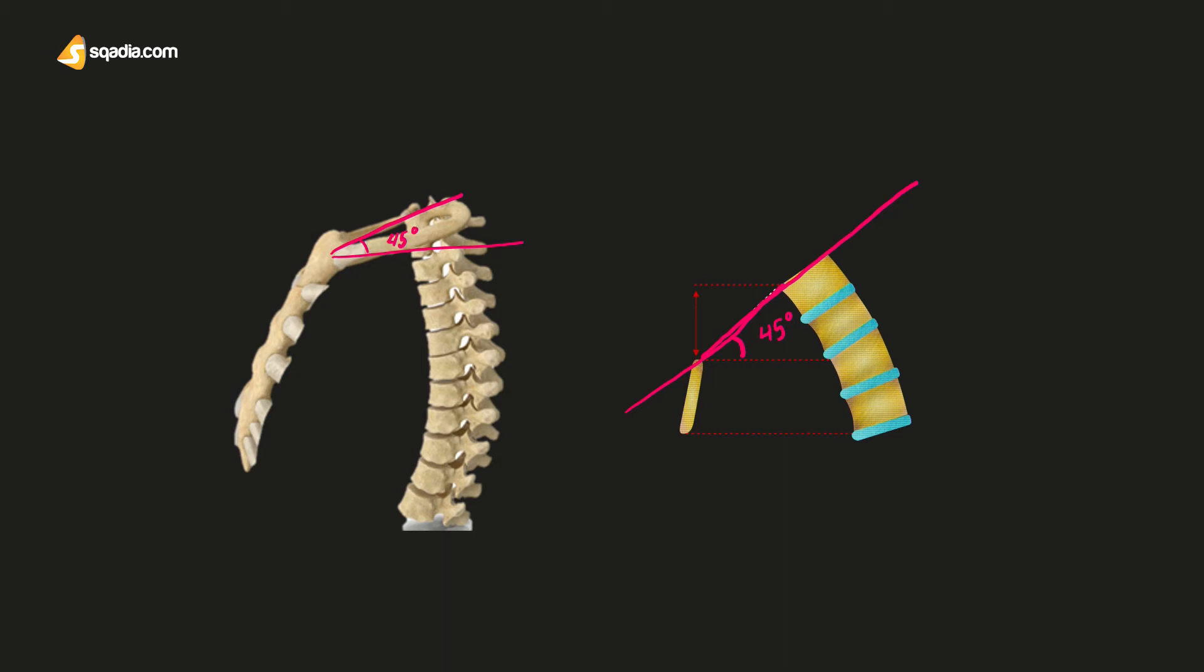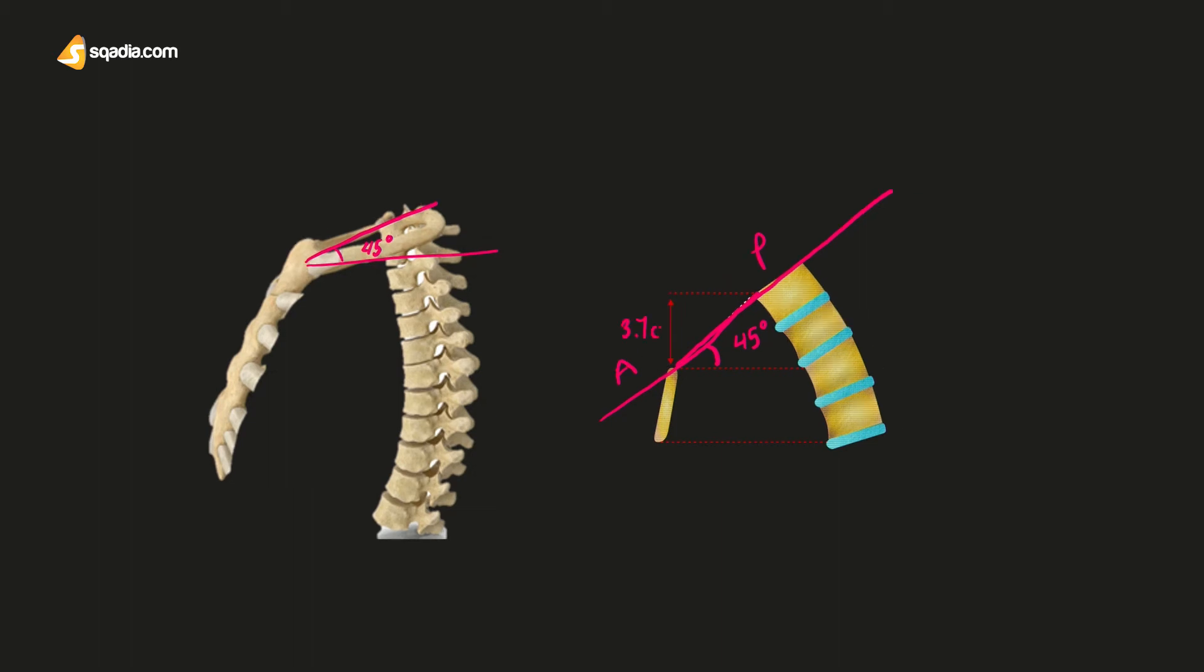The anterior part of the inlet lies 3.7 centimeters below the posterior part. So this is the anterior part and this is the posterior part. And as you can see, this length here is 3.7 centimeters. We can see it here as well. And the upper border of the manubrium sterni lies at the level of the upper border of the T3 vertebra. So as you can see here, we have T1, T2, and T3. So this is the upper border of the T3 vertebra. So now you can see how the plane of the superior aperture of the thorax is anteroinferior.